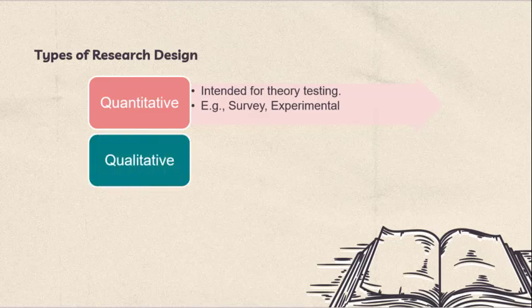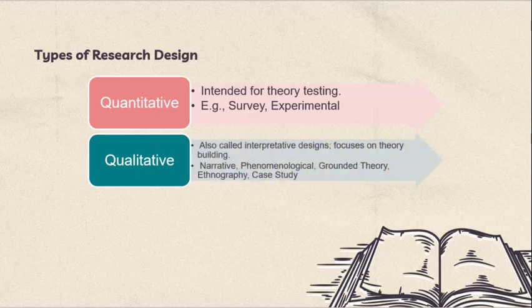Qualitative research design, also called interpretative designs, focuses on theory building. These strategies of inquiry explore and interpret the meanings that people or groups of people ascribe to a specific social or personal issue. Examples of qualitative research designs are narrative study, phenomenological study, grounded theory, ethnography, and case study.